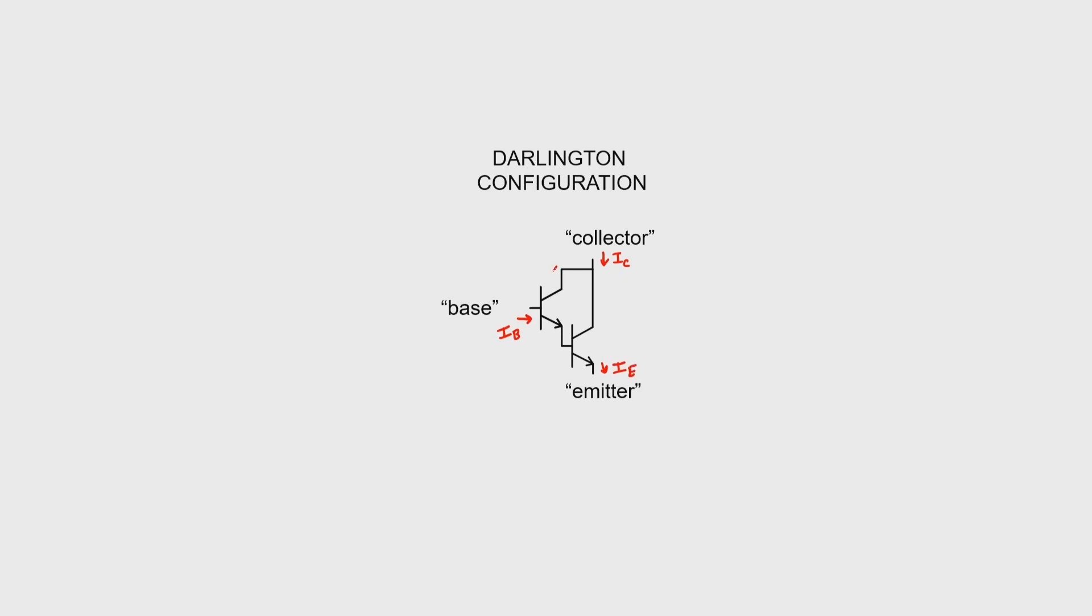The collector current is going to split. Let's call this branch IC1, and let's call this branch IC2. Let's call the emitter current here IE1, and this is also basically the base of transistor 2, so let's call it IB2 there. Let's analyze this circuit.